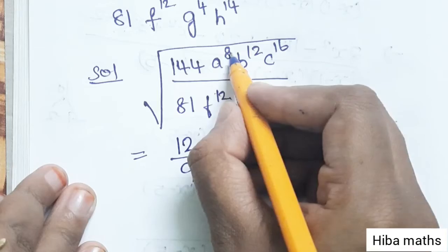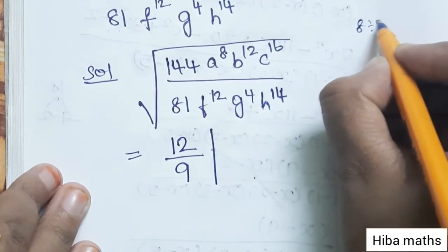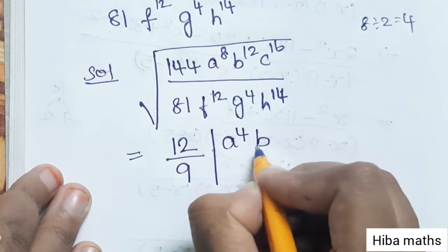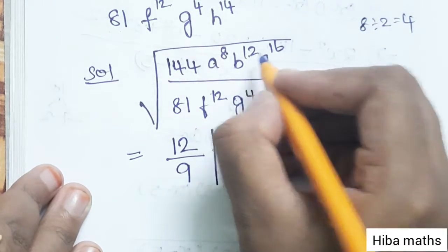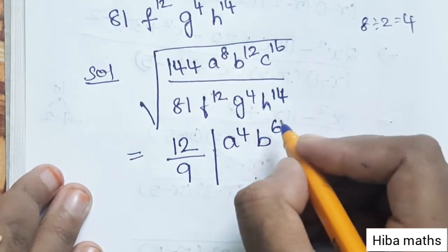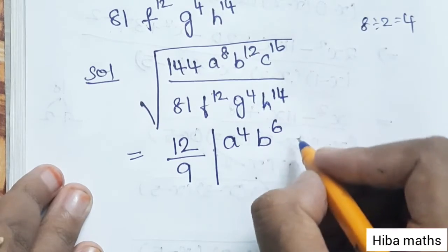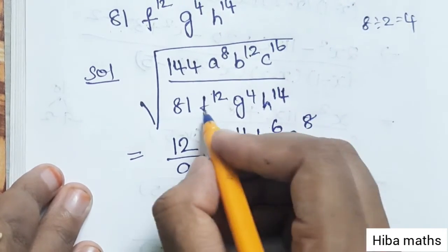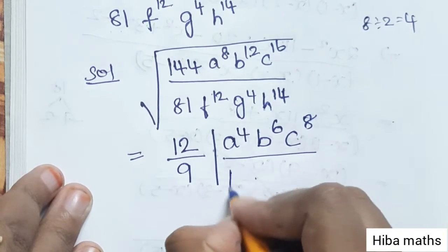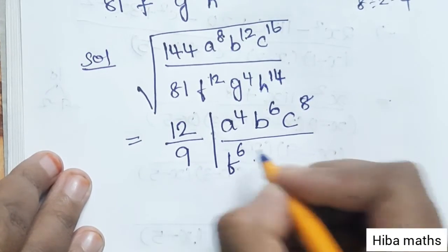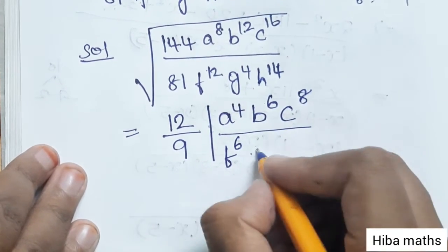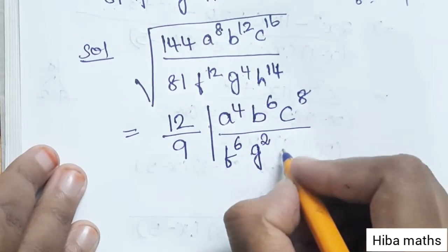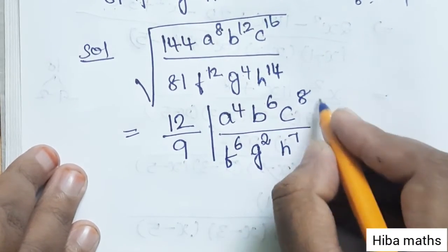Now for the variables: a power 8 divided by 2 is 4, so we get a power 4. b power 12 divided by 2 is 6, so b power 6. c power 16 divided by 2 is 8, giving c power 8. f power 12 divided by 2 is 6. g power 4 divided by 2 is 2.